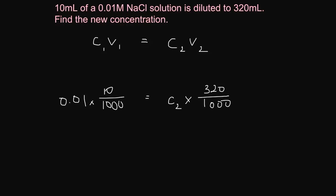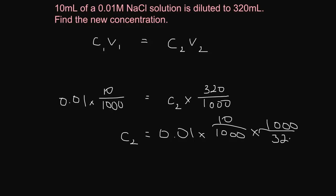Now, so we have C2 equals 0.01 times 10 on 1000 divided by 320 on 1000. So, if we put that into a calculator, we end up with 3.12 times 10 to the minus 4 molar.